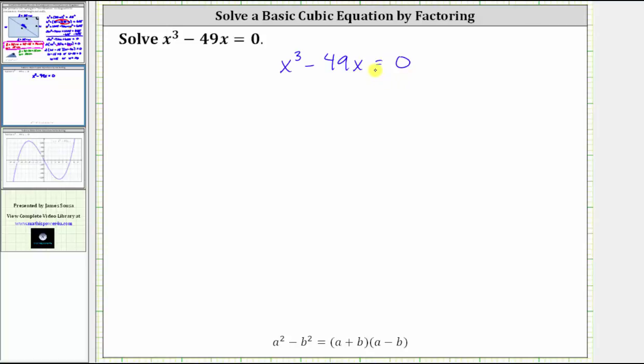Remember, the first step in factoring is always to factor out the greatest common factor. Looking at the two terms on the left side, they both share a common factor of x. X is the greatest common factor.